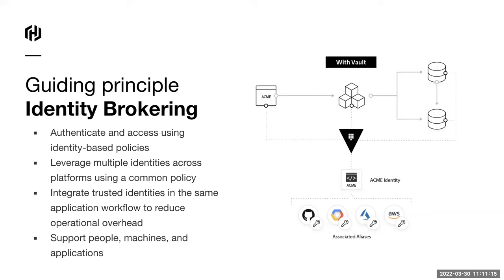Once connected to Vault, we associate those identities with policies that say this specific identity is allowed access to these specific credentials. For example, a web application connecting via EC2 IAM might have a policy that says it can access certain database credentials. It's a very cool system — we have a host of different identity providers so you can plug in with your existing infrastructure.